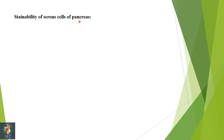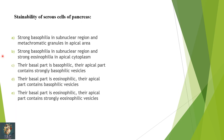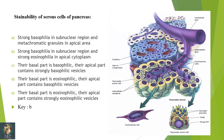Next: the staining characteristics of serous cells of the pancreas — strong basophilia in sub-nuclear region and metachromatic granules in apical area; strong basophilia in sub-nuclear region and strong eosinophilia in apical cytoplasm; basal part basophilic and apical strongly basophilic; basal part eosinophilic and apical basophilic; basal part eosinophilic and apical strongly eosinophilic. The pancreas acinar serous cells have the nucleus in the basal area with strong basophilia in the sub-nuclear region and apical zymogen granules which are eosinophilic. Correct option is B.